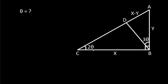In this video, we have been given a right-angle triangle ABC where AB is y, BC is x, and AD is x minus y. Angle ABD is 3 theta and angle ACB is 2 theta. We have to find theta.